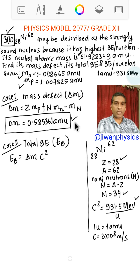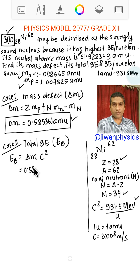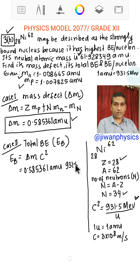We have to put the value of delta M in this expression. So 0.585361 AMU, and C squared is 931.5 MeV per U. And we know 1U equals 1 AMU, so they cancel.